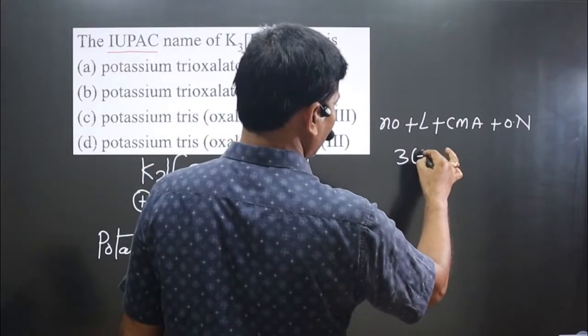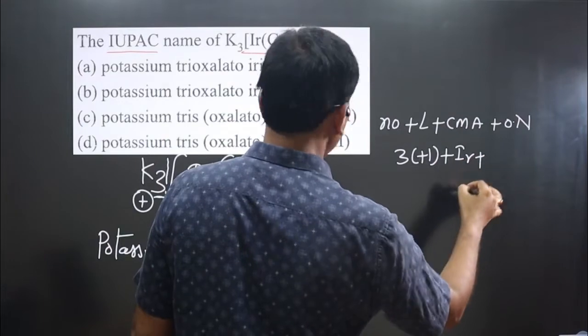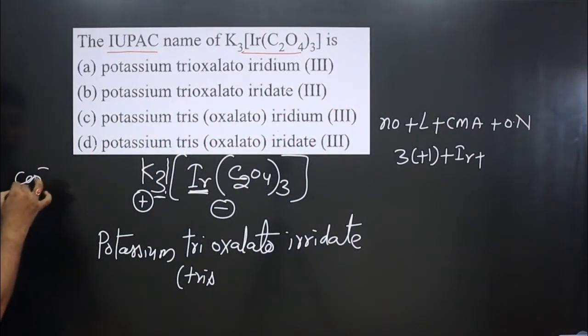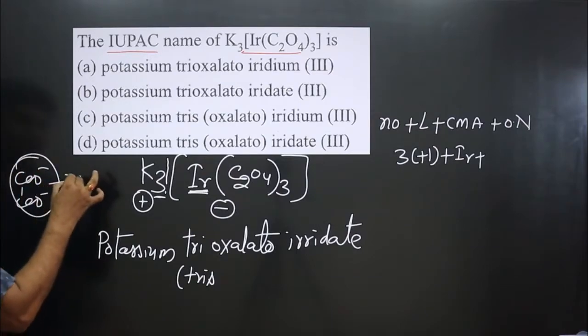So we have three potassium. Potassium is +1. Then we have iridium x plus oxalate ion. It is a negative bidentate ligand: C₂O₄²⁻. Overall charge is -2. So we have three molecules, -2 equals zero.